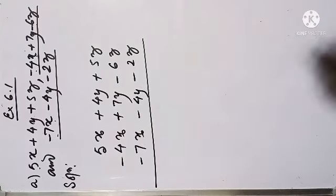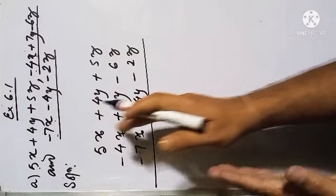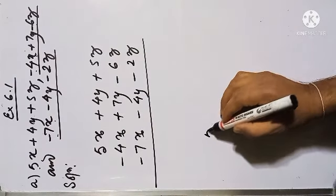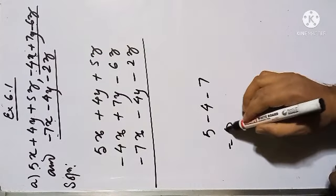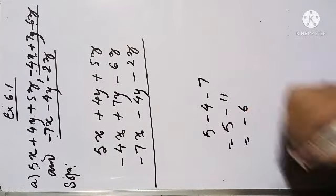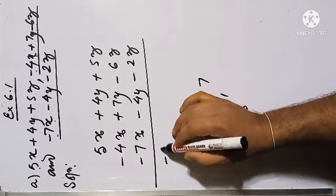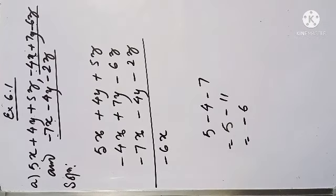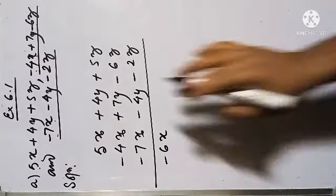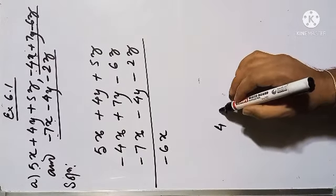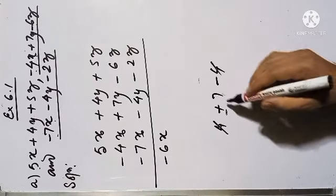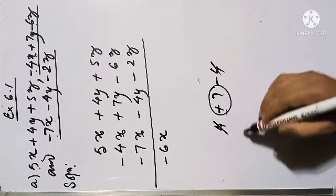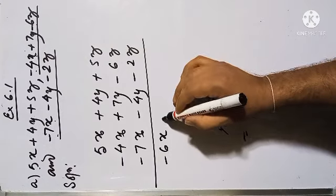These three terms are like terms and we have to add them. Let us see: 5 minus 4 minus 7 — we get 5 minus 11, which gives us minus 6, so I'm going to write minus 6x. For the y terms, we have 4 plus 7 minus 4 — the 4 and minus 4 cancel, and finally we get plus 7y.